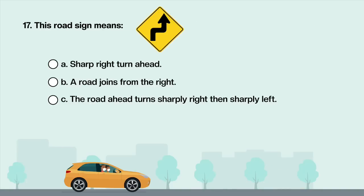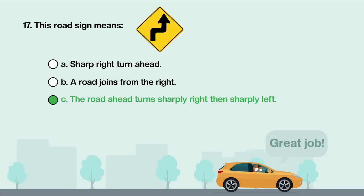This road sign means: A. Sharp right turn ahead. B. A road joins from the right. C. The road ahead turns sharply right then sharply left. Answer is C: The road ahead turns sharply right then sharply left.